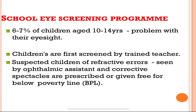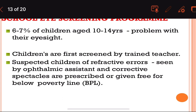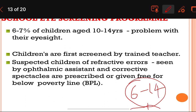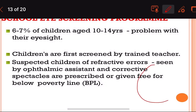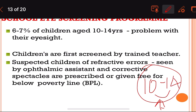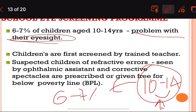Moving further to the school eye screening program: in the age group of 10 to 14 years, about 6 to 7% of children have a problem with their eyesight.